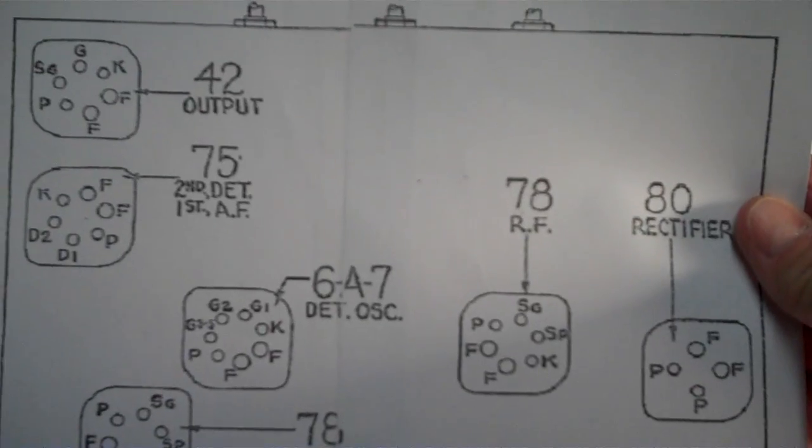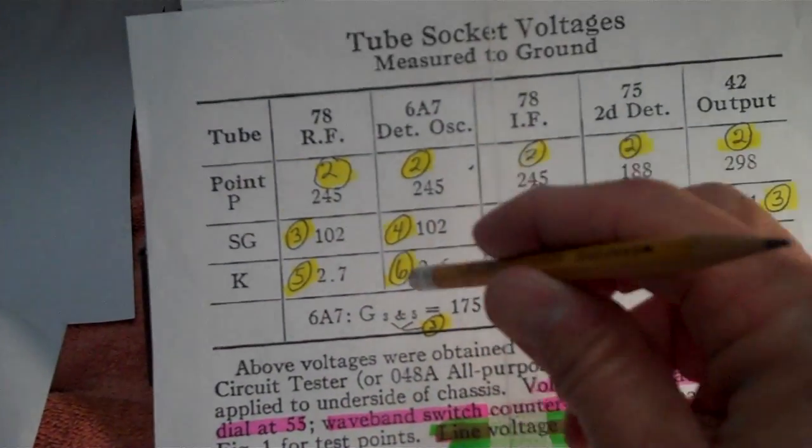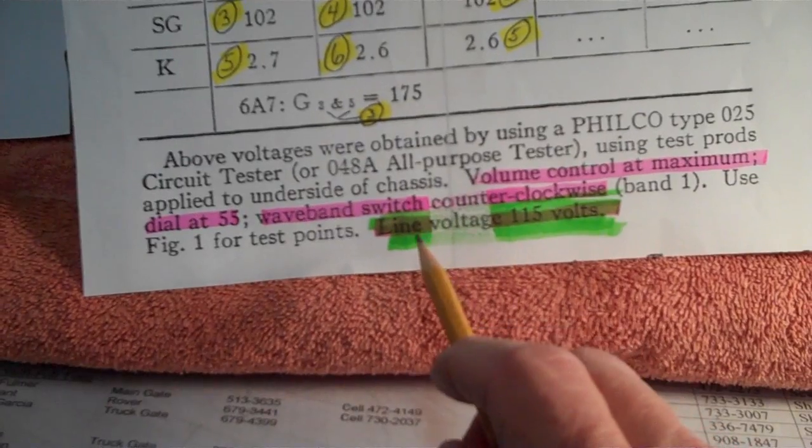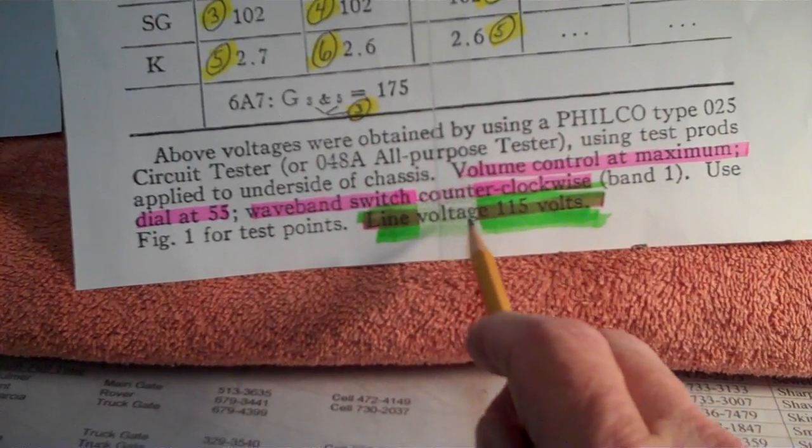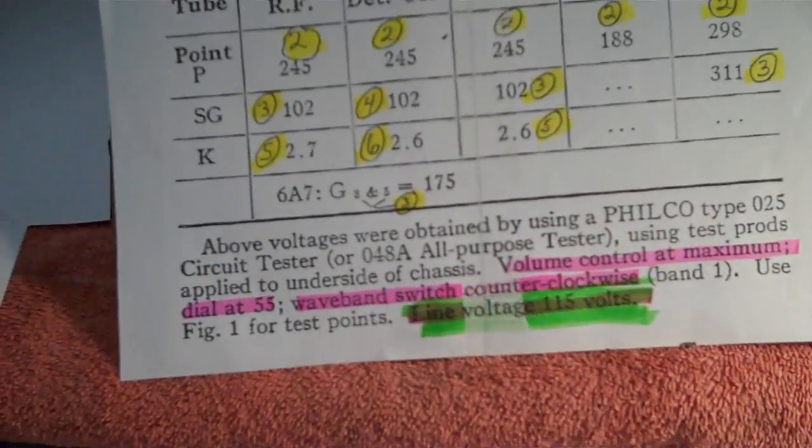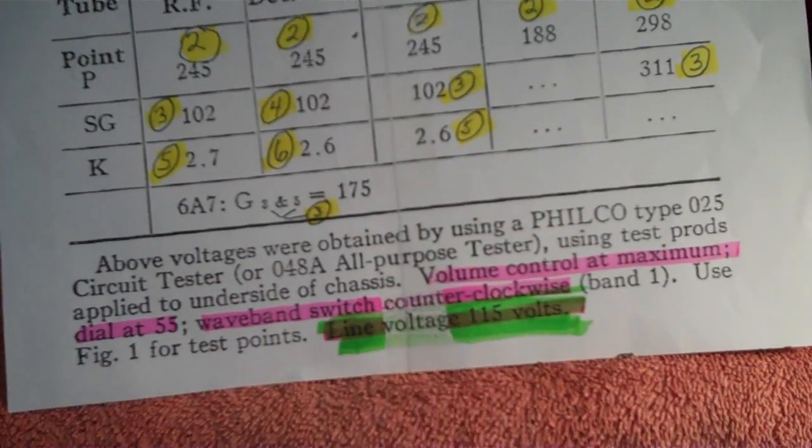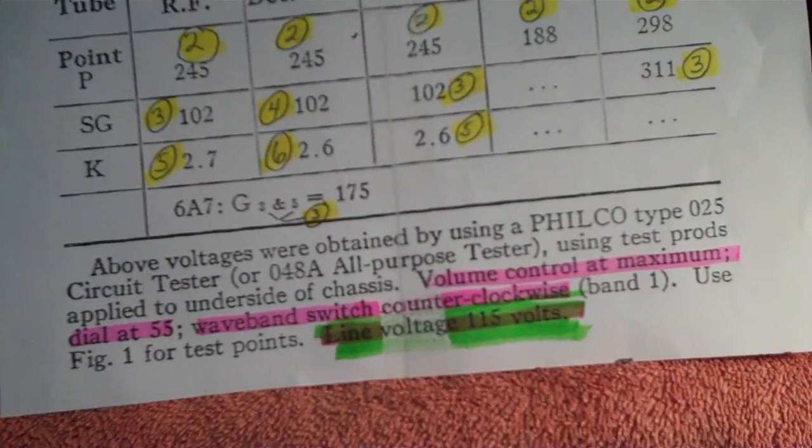And then you use figure one for the test points, which was this right here. It's just a drawing that shows you which tube is which and where it's laid out in the chassis. But we don't need that because ours is already marked. And we already have the pins marked up here. And then it says you're supposed to have a line voltage of 115 volts. Now, we're going to have, I think, a line voltage of a little less than 115. And I'll tell you why.